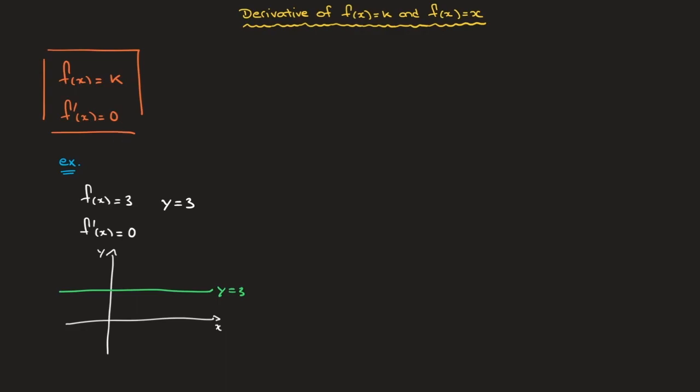Let's see the other case, which is if f of x is equal to x. Well, in this case, if f of x is just equal to x, then its derivative, f dash of x, is equal to one.